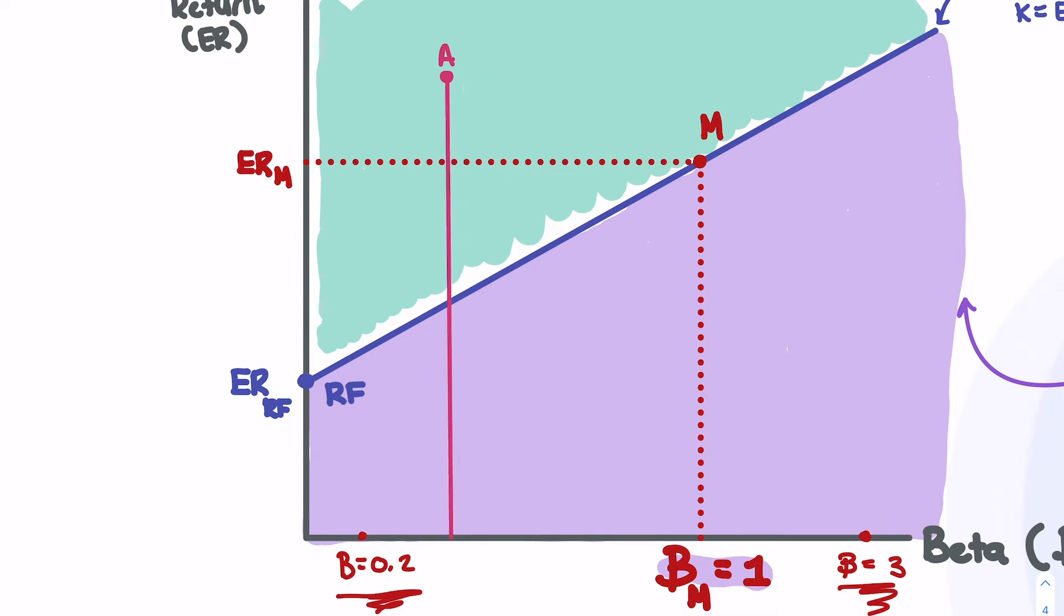And we're going to look at what it says beta. In this case, we'll give it a beta right here, and an expected return right here. So we have this. Call this return 20%, and we're going to say that its beta is 0.5 for point A. So ERA.